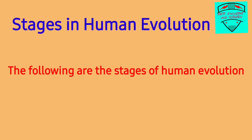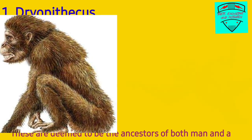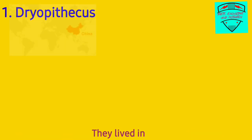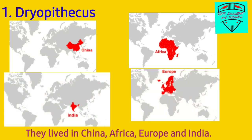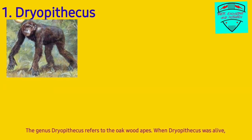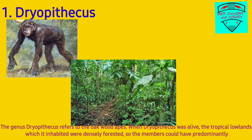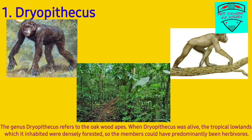The first stage of human evolution is Dryopithecus, deemed to be the ancestors of both man and apes. They lived in China, Africa, Europe, and India. The genus Dryopithecus refers to the oakwood apes. When Dryopithecus was alive, the tropical lowlands it inhabited were densely forested, so its members could have predominantly been herbivores.